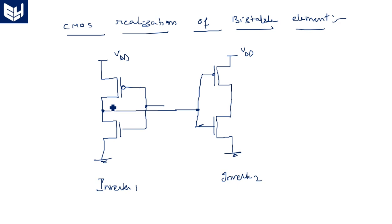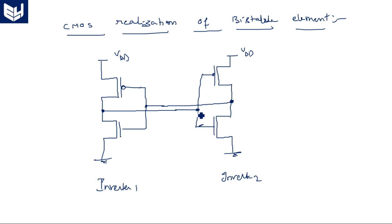The output of inverter 1, taken from the drain center node, is connected as the input of inverter 2. And the output of inverter 2 is connected back as the input of inverter 1. This is the CMOS circuit realization of the basic sequential element — the bistable element.